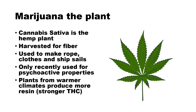Marijuana the plant. Marijuana is classified as cannabis sativa and is the hemp plant. It's been harvested for a very long time for fiber — it can be used to make rope, clothes, and ship sails. Only recently has it been used for its psychoactive properties. In the wild, plants from warmer climates produce more resin, therefore have stronger THC content and more psychoactive properties. Some authorities separate the plant into two species, while others consider them varieties of one species.